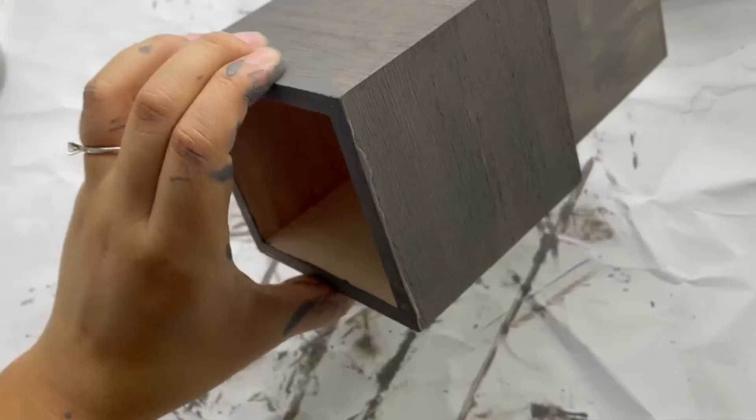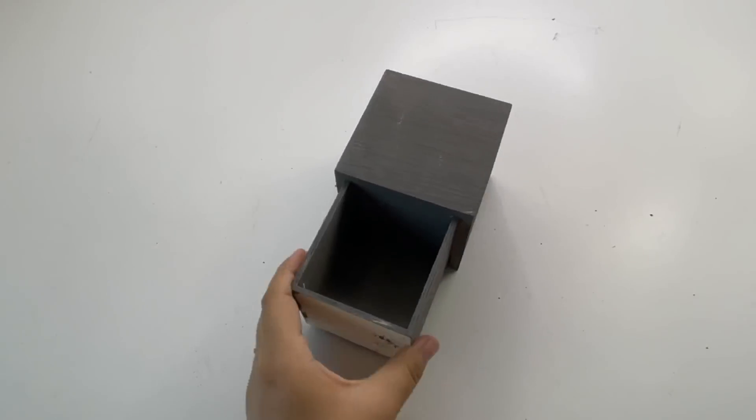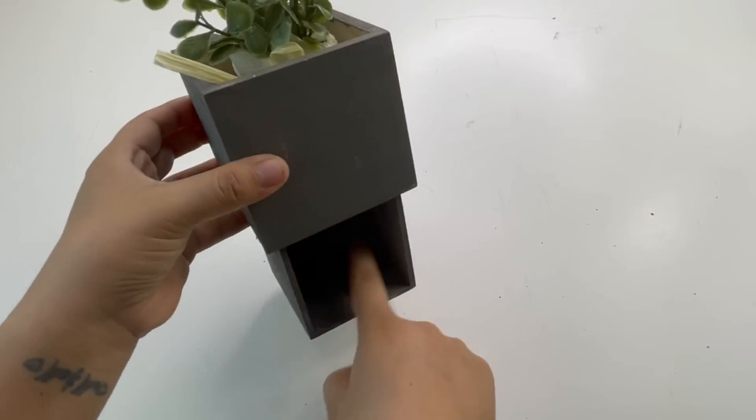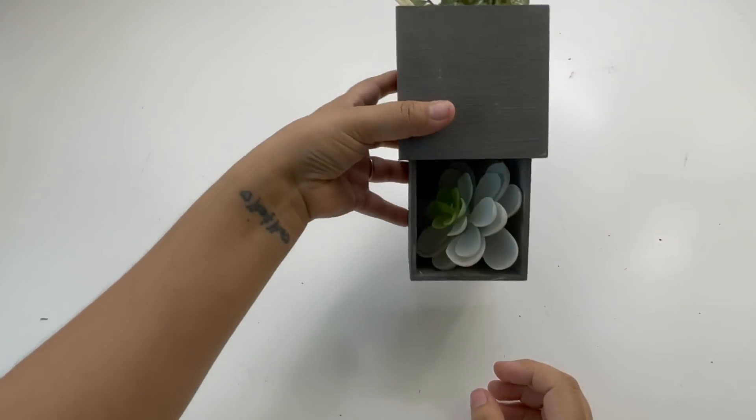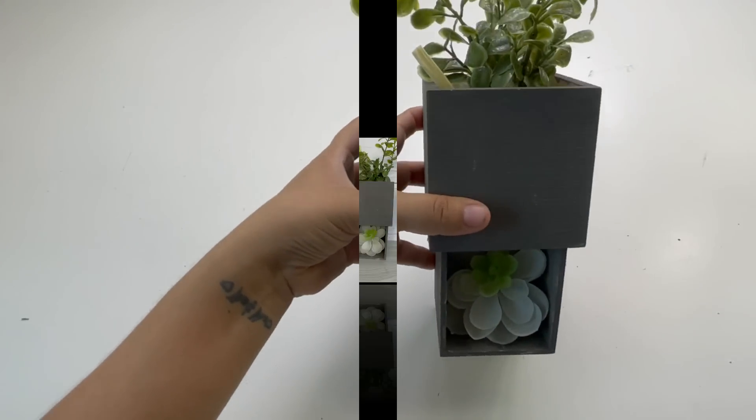After this is dry, I am going to add some greenery at the top and a little succulent on the other side. Now you can use this two different ways. You can use it like this, or the other option I will be showing you is by adding like a succulent or a little planter at the bottom and then use this like a pencil holder. And that is it.